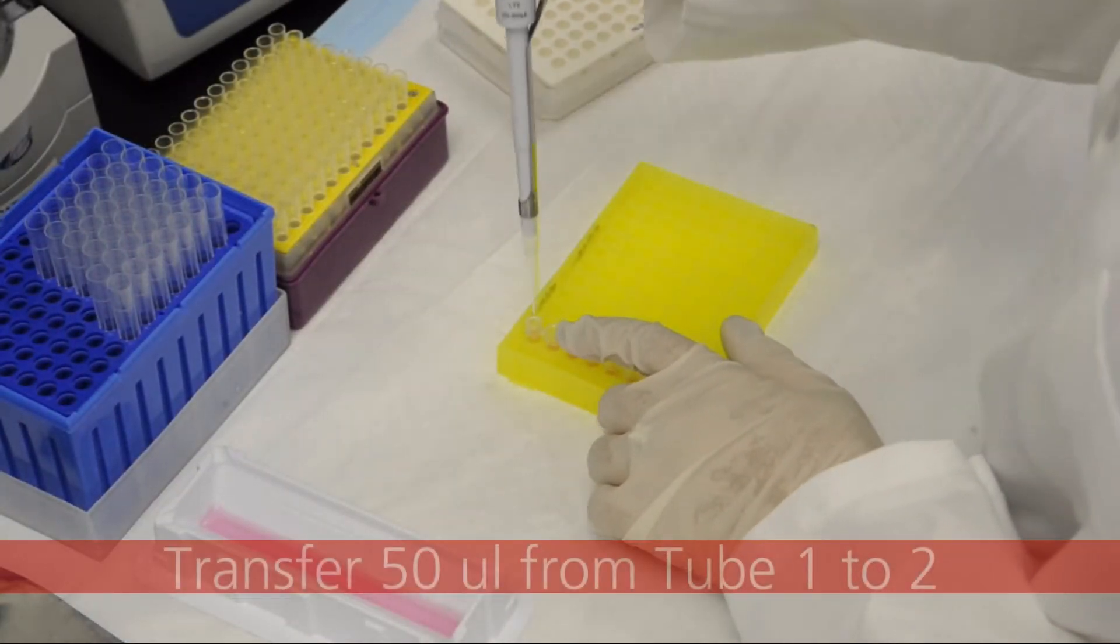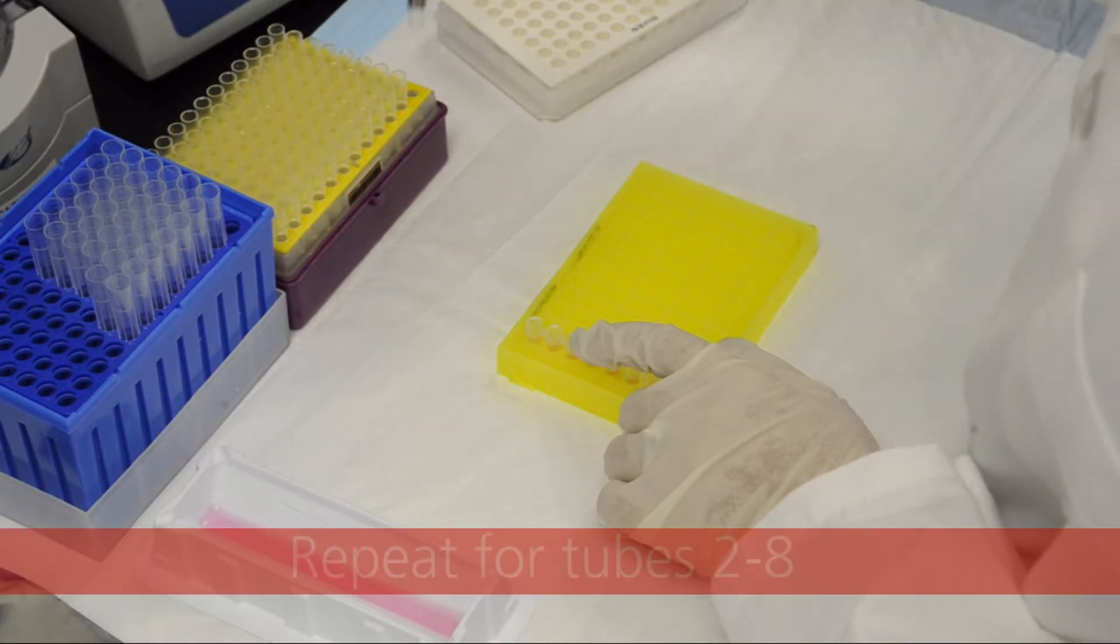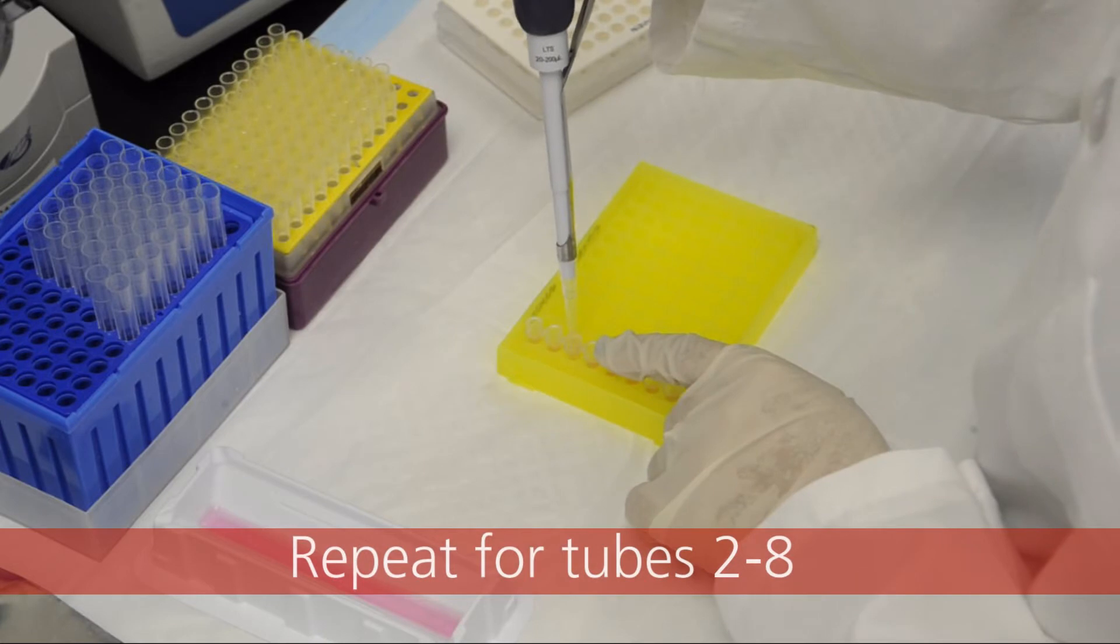Transfer 50 microliters from tube 1 to tube 2 and mix by pipetting up and down 10 times. Using a new pipet, transfer 50 microliters from tube 2 to tube 3 and repeat for the rest of the tubes.